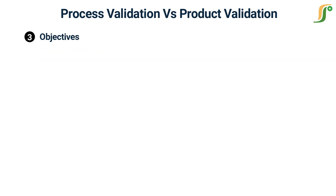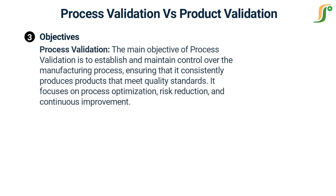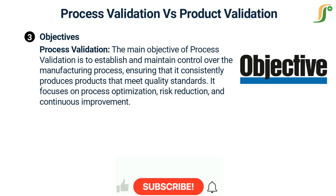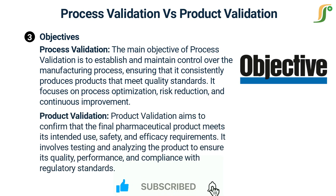Objectives: The main objective of process validation is to establish and maintain control over the manufacturing process, ensuring that it consistently produces products that meet quality standards. It focuses on process optimization, risk reduction, and continuous improvement.